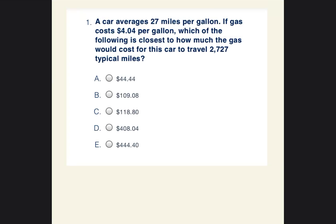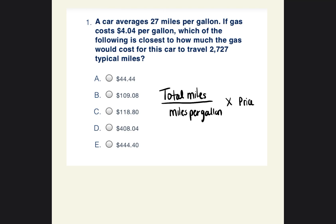A car averages 27 miles per gallon. If gas costs $4.04 per gallon, which of the following is closest to how much the gas would cost for this car to travel 2,727 miles? To calculate this, I need to take the total miles of the trip, divide it by the miles per gallon, and then multiply that answer by the price per gallon.